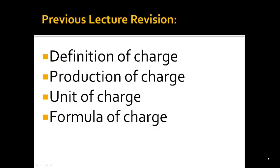Today, let's look at it critically. Number one: the definition of charge. Charge is the product of the current in a material and the time the current spent in the material. For production of charge, charges are produced by friction — when two bodies rub against each other, an electron is rubbed off from one body. That body becomes positively charged, and the one that gained the electron becomes negatively charged.